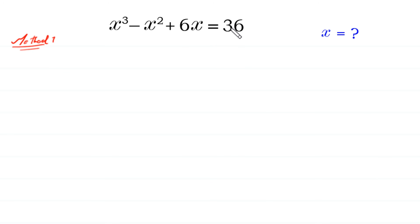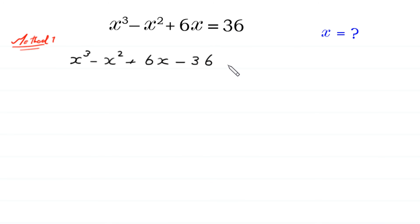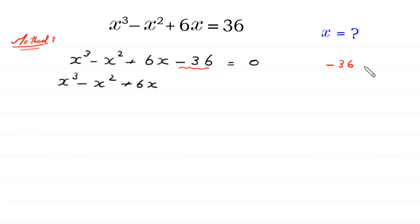In Method 1, first of all, we move this 36 to the left side. So we have x cubed minus x squared plus 6x, and this plus 36 becomes negative 36, is equal to 0. Next, we split this negative 36 as negative 27 minus 9, which is equal to 0.